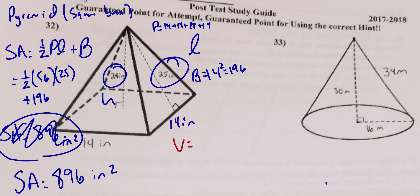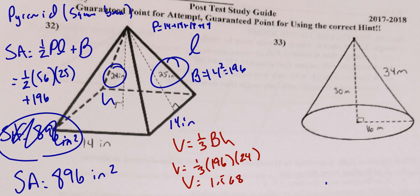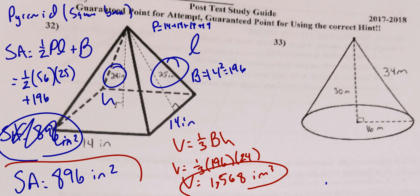Volume of the pyramid = (1/3) × area of base × height. Area of base = 196, height = 25 (not 24). Volume = (1/3)(196)(25) ≈ 1,568 cubic inches. There's the volume and surface area for number 32.